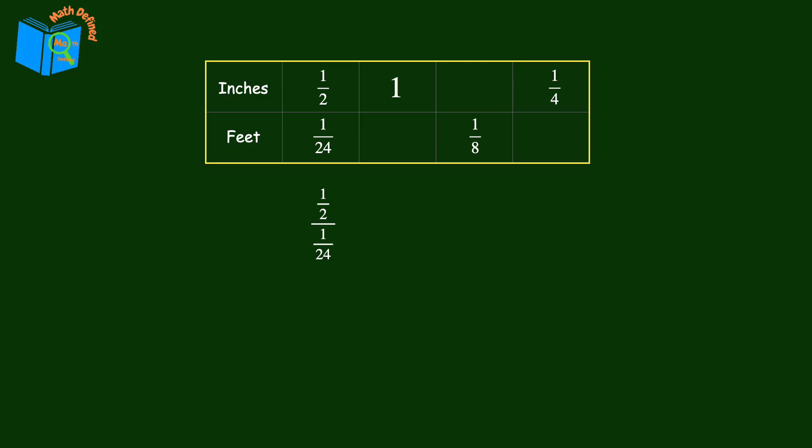1 half over 1 24th. Don't let this complex fraction scare you. It's just a division problem. 1 half divided by 1 24th. Multiplying by the reciprocal results in 24 over 2, which simplifies to 12. So the value of the ratio is 12. And we can multiply the number of feet by 12 to find the number of inches.